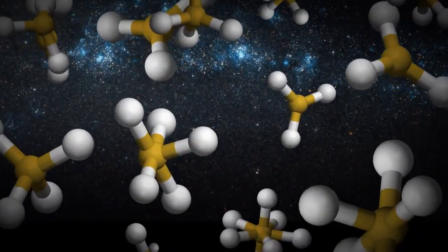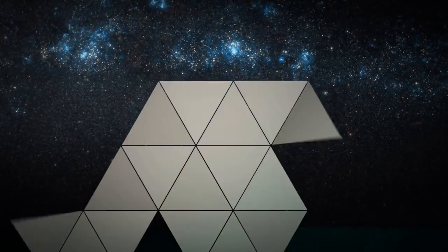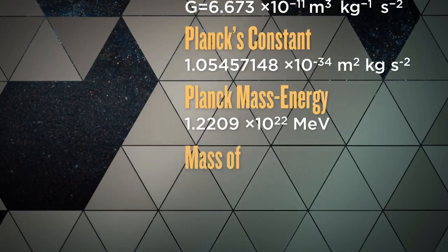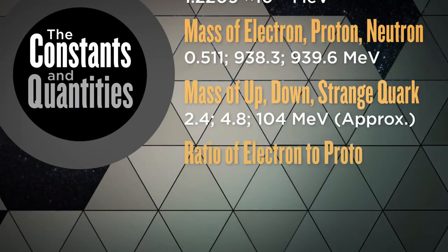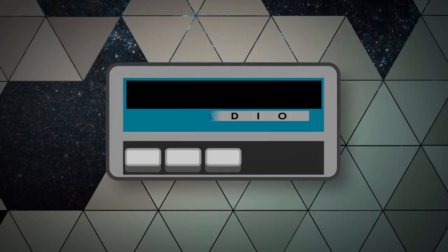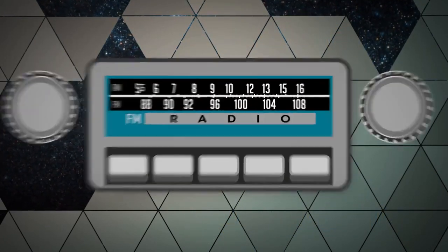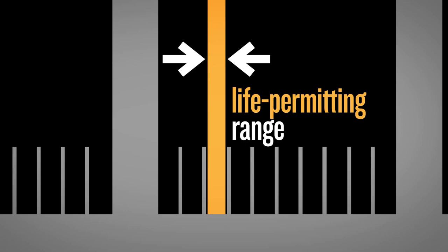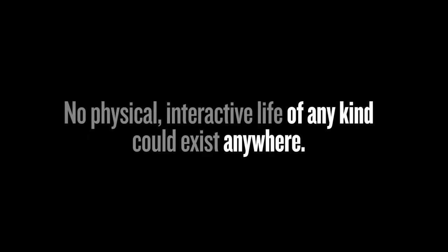From galaxies and stars down to atoms and subatomic particles, the very structure of our universe is determined by these numbers. These are the fundamental constants and quantities of the universe. Scientists have come to the shocking realization that each of these numbers has been carefully dialed to an astonishingly precise value, a value that falls within an exceedingly narrow, life-permitting range. If any one of these numbers were altered by even a hair's breadth, no physical interactive life of any kind could exist anywhere.